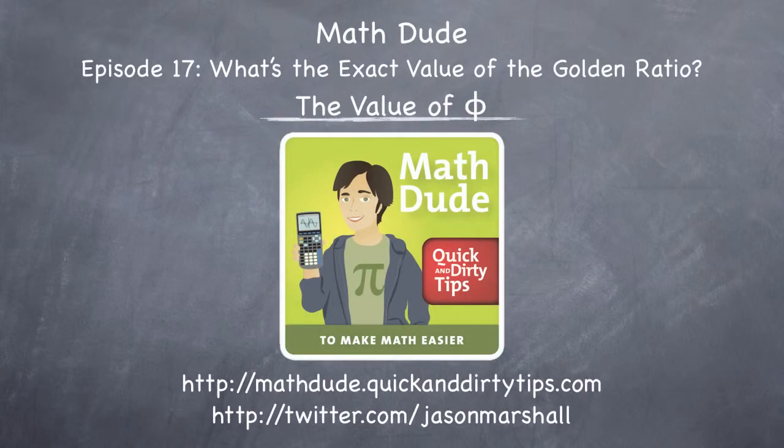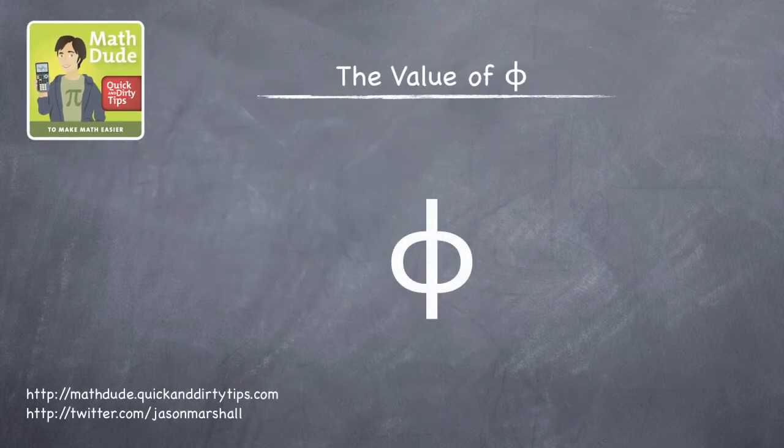Hey math fans, Jason Marshall here with a special look at calculating the true value of phi, the golden ratio, from Math Dude episode 17.